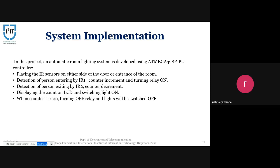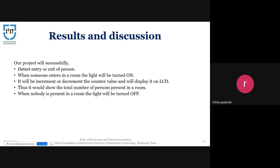Moving on to results and discussion: our project will successfully detect the entry or exit of a person. When someone enters the room, the light will be turned on, and the counter will increment or decrement and display on the LCD, showing the total number of persons present in the room. When nobody is present, the light will be turned off.